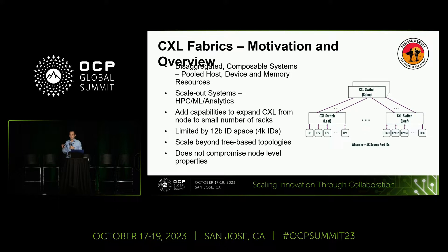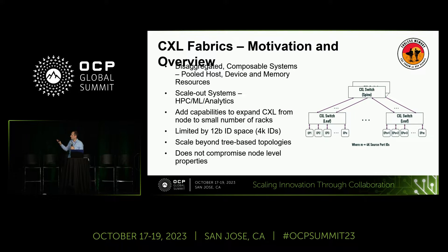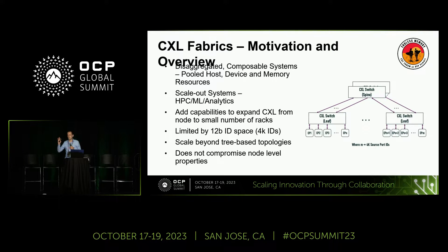There's a trade-off in terms of communication efficiency on the space you allow for addressing. We decided that 12 bits was where we wanted to stop — a pretty small ID space in terms of overhead, but still allows you to scale up to 4,000 IDs. We certainly wanted to scale beyond the tree-based topology limitation that came from PCIe. Tree-based topologies when scaling out can be pretty problematic. And all of this needed to ensure it did not compromise node-level properties, because single-node memory expansion within a single server is very important.